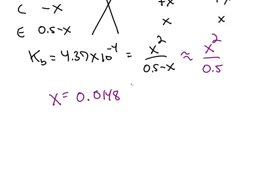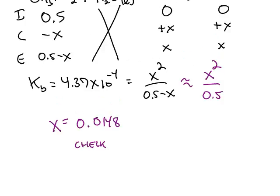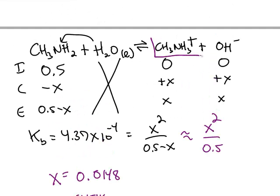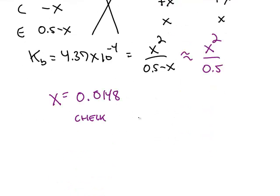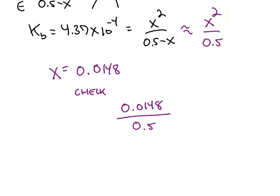And when you're doing the 5% check, you are doing the percent ionization. So we're going to take that concentration of the conjugate acid of the original base, which is X, divide that by the initial molarity of the base, which is 0.5, and then multiply the answer by 100%.